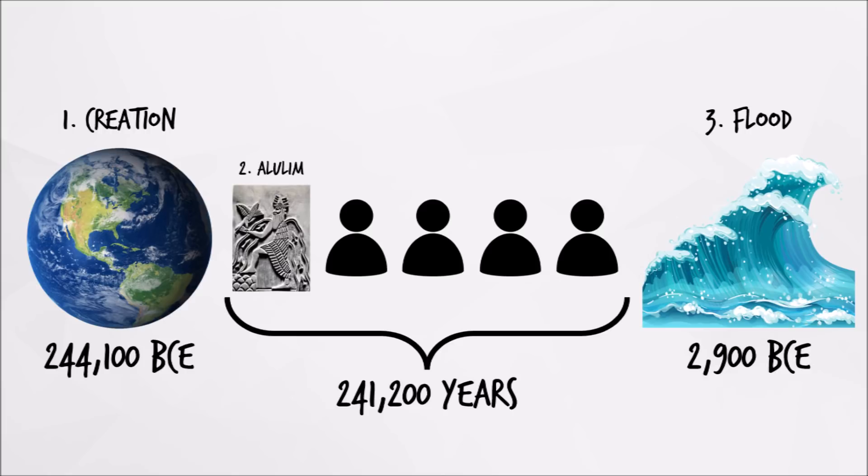Yet, Sumerians did not really believe in a specific chronology, so the date 244,100 BCE is more of a coincidental date based on fabricated lengths of rule.